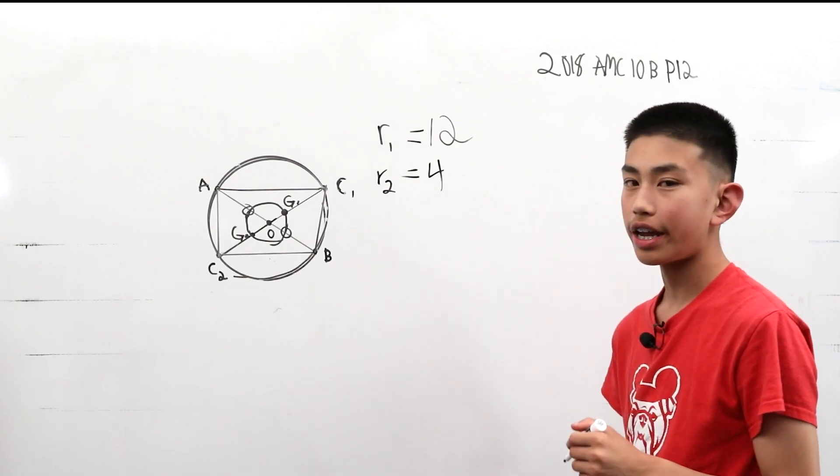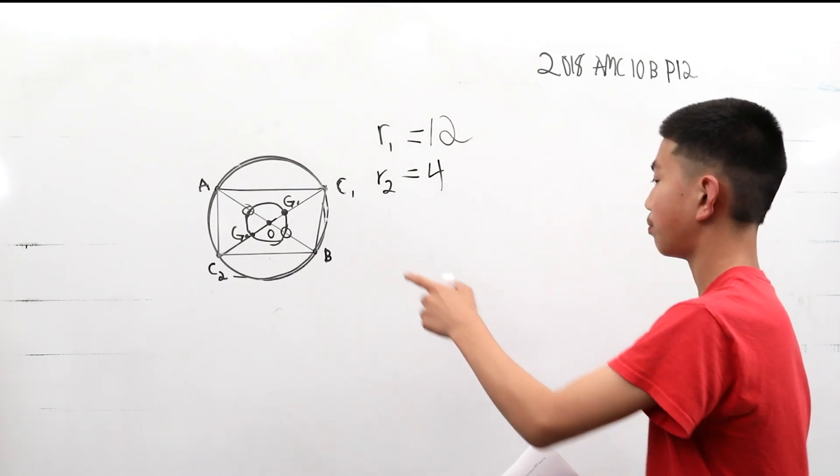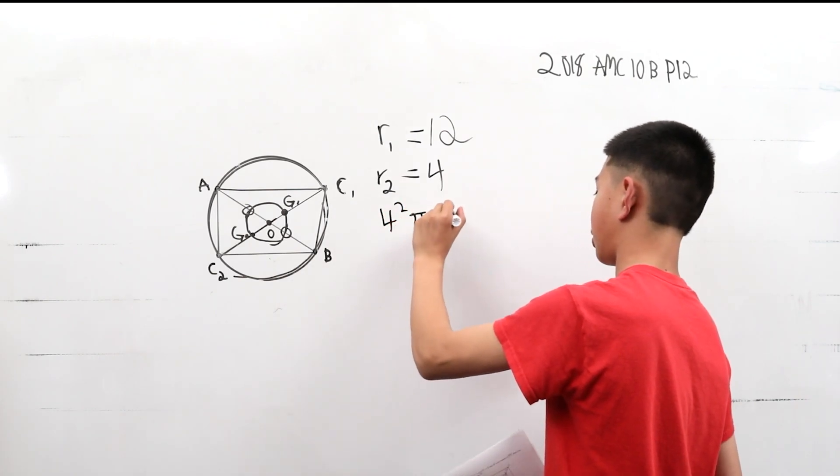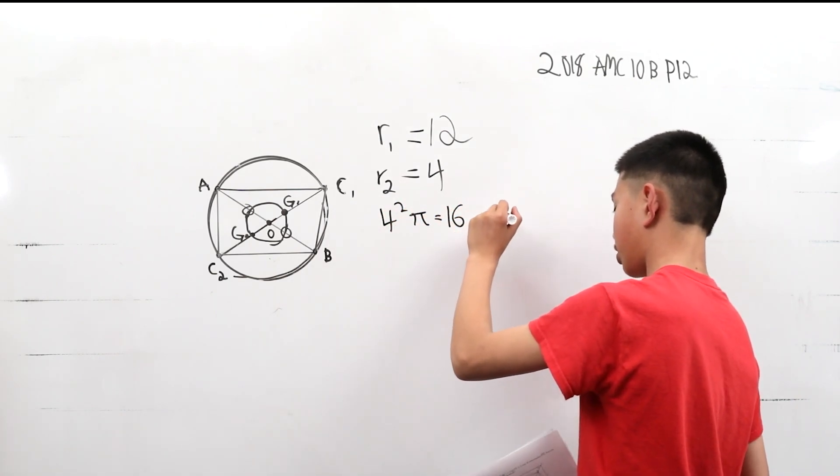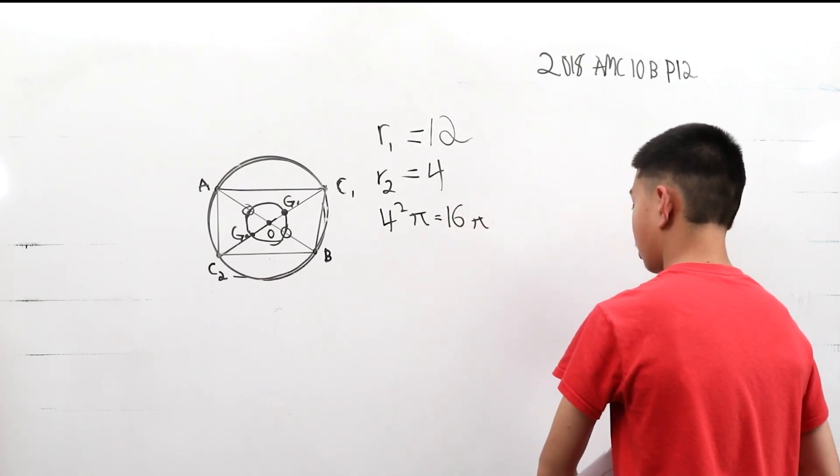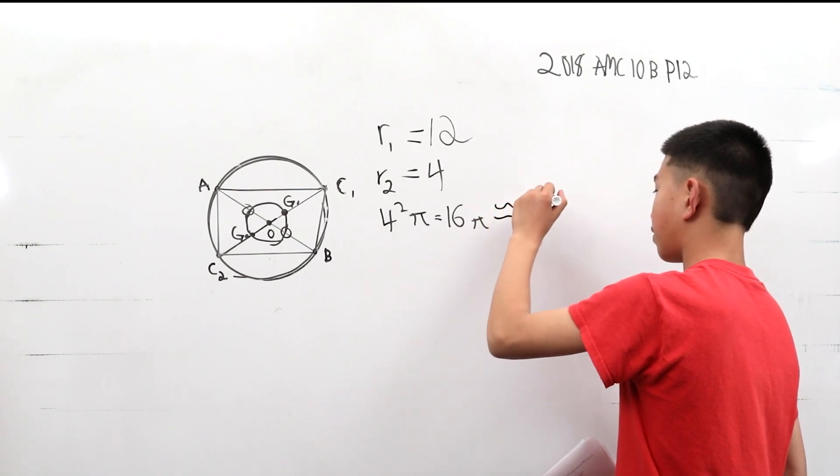That means the area of this smaller circle will be 4 squared pi, which is 16 pi, which is about 50.